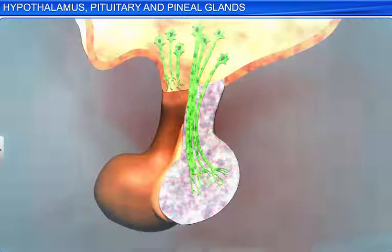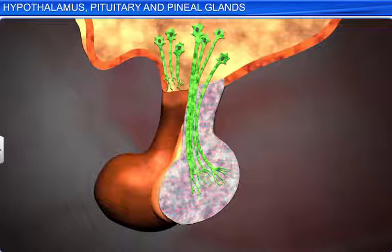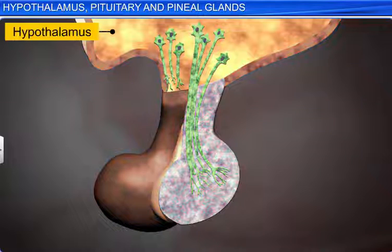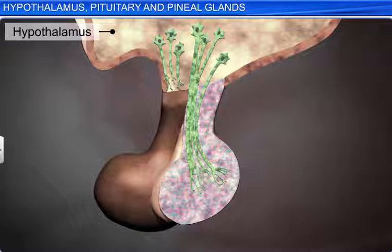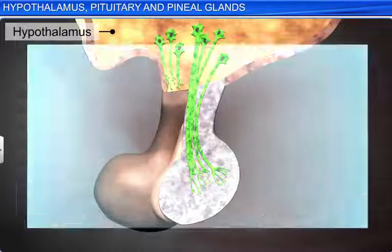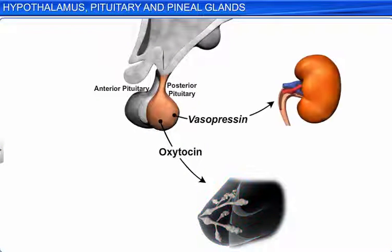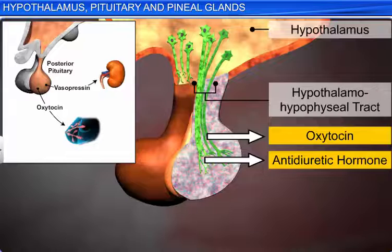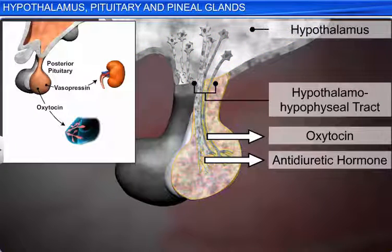The neurohypophysis develops from the terminal region of an ectodermal outgrowth of the hypothalamus. It is also known as pars nervosa, or the posterior lobe of the pituitary gland. It is under the direct neural control of the hypothalamus and stores and releases two hormones called oxytocin and vasopressin, which are synthesized by the hypothalamus and transported to the neurohypophysis through axons.